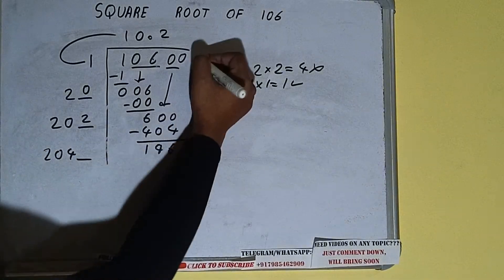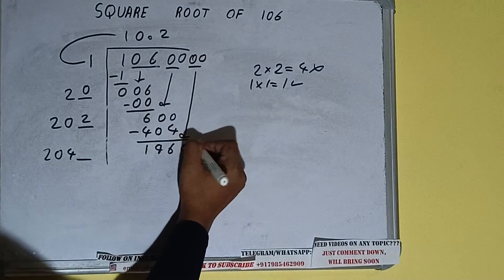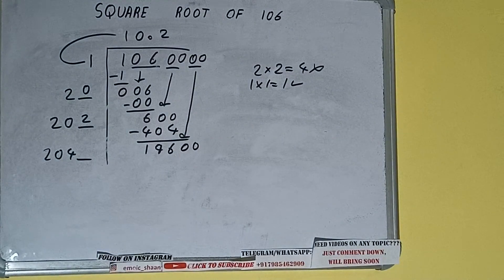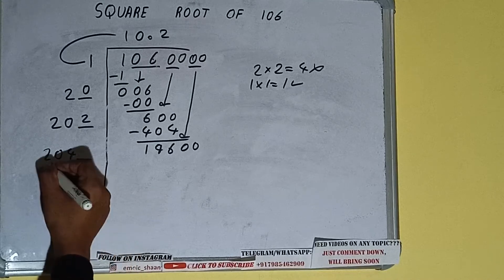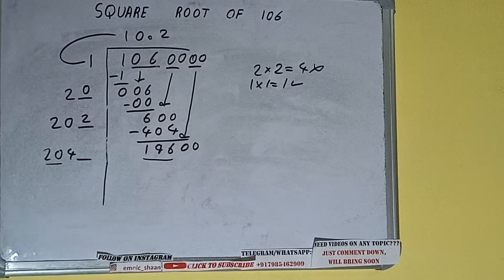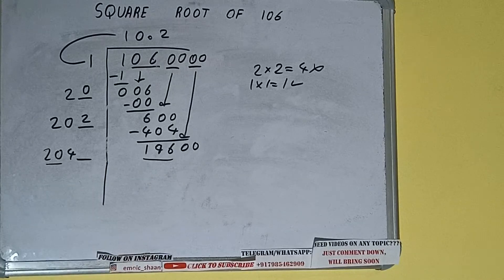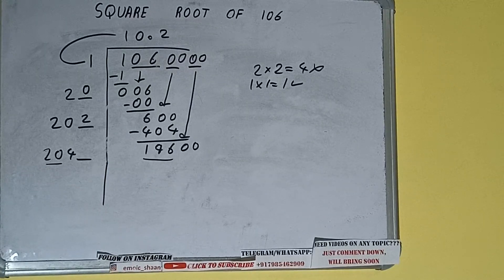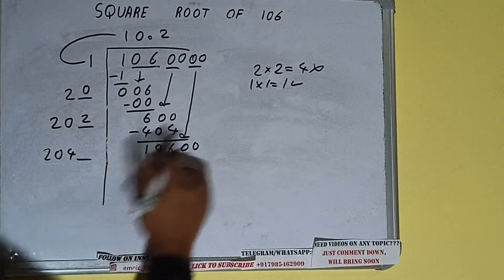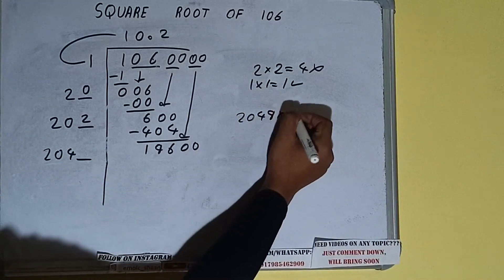This number needs to be made bigger, so bring the next pair of zeros down and it will be 19,600. Now compare this 20 with 196.